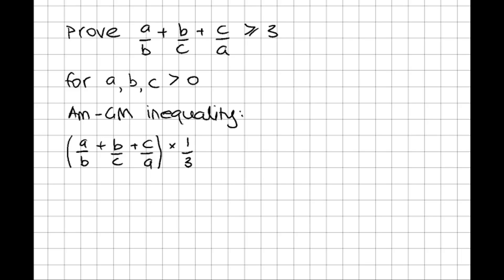That there is the arithmetic mean, and the reason we can see it will be helpful is because we've essentially got the left hand side of the inequality that we want to prove and we've also got a 3. So that's really helpful.